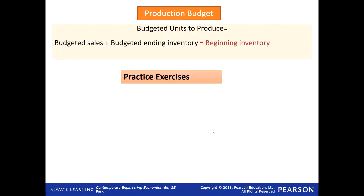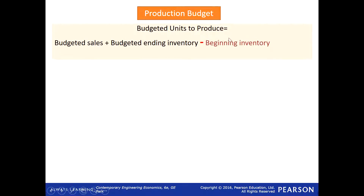Now before we start, here is a small question about preparing a production budget. A production budget means how many units are we going to produce or manufacture — how much is the budgeted sales, i.e., how much are we going to sell.